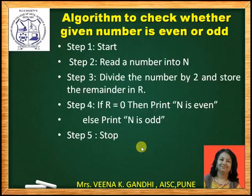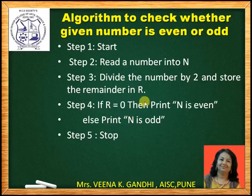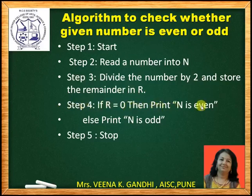Next algorithm is to check whether a given number is even or odd. A number is even when it is completely divisible by two, meaning its remainder is zero. The same logic we will write in steps. Step one: start. Step two: read the number into n. Step three: divide n by two and store its remainder in R. Step four: if R equals zero, print n is even; else print n is odd. Step five: stop.